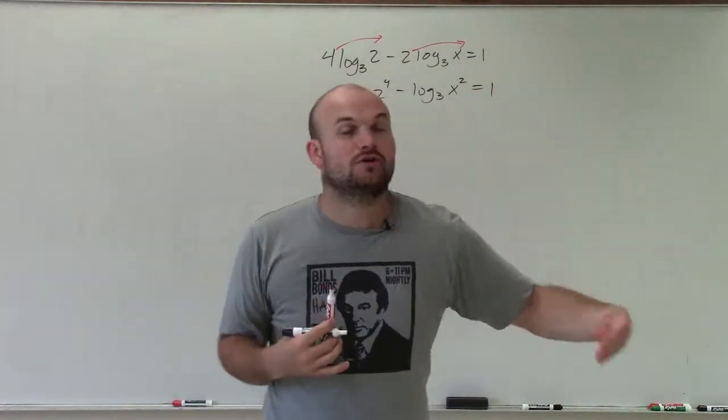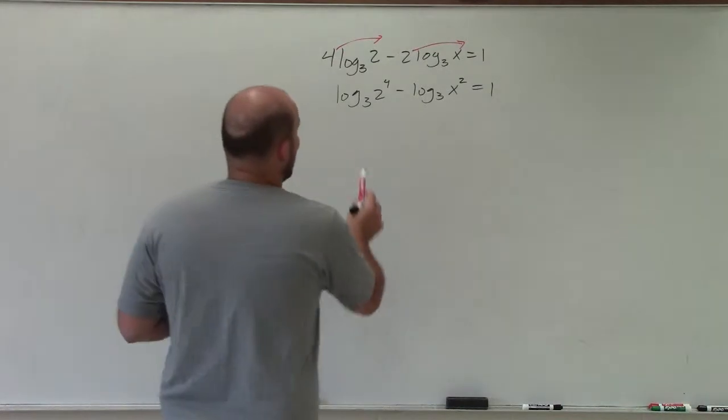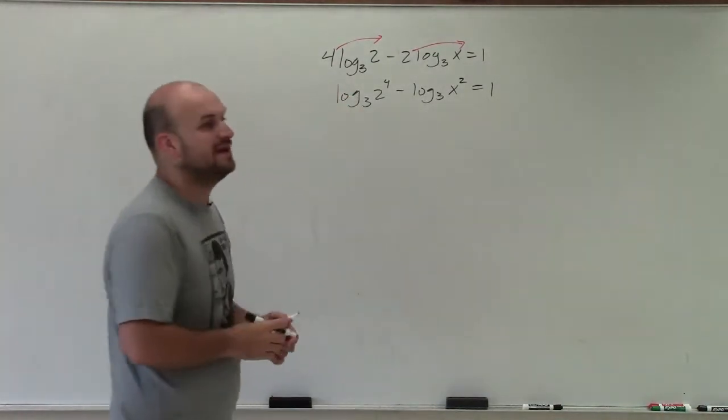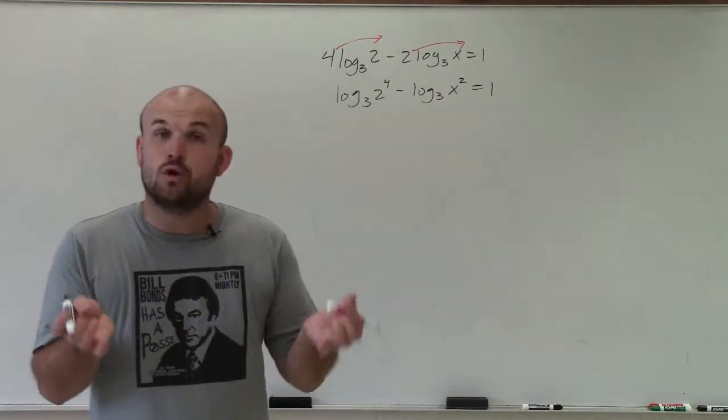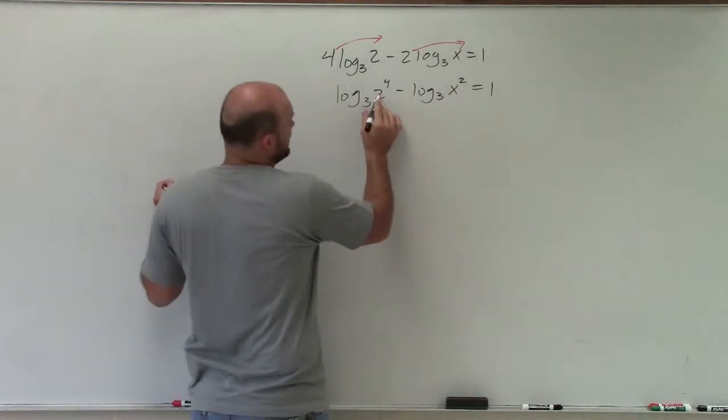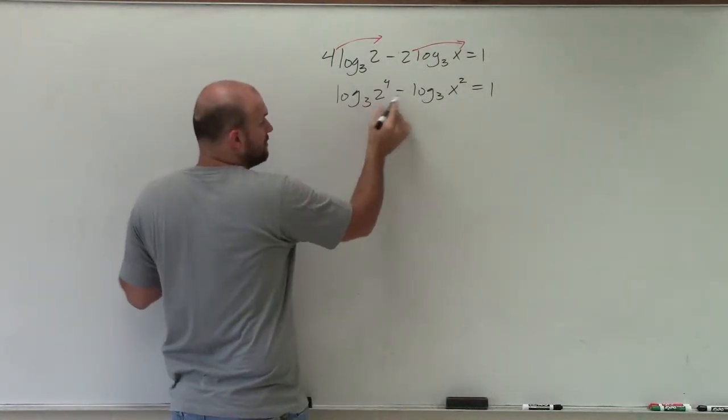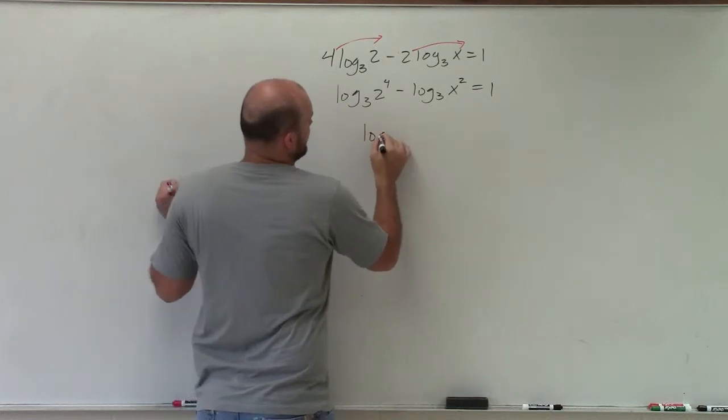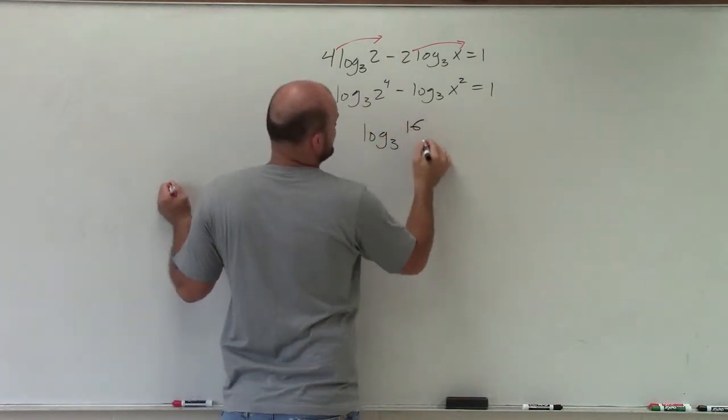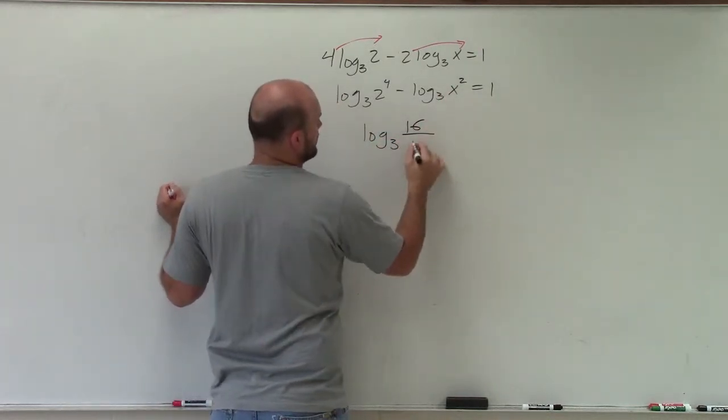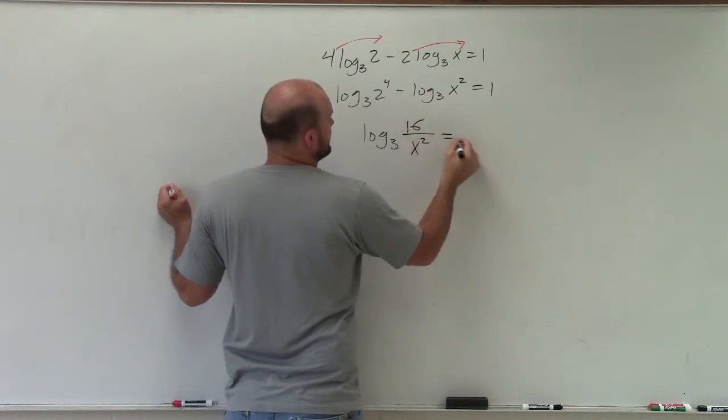So now I see that I have a logarithm subtracted by another logarithm, and they have the same base. So since they have the same base, I can rewrite this as the quotient of those terms within one logarithm. I can also evaluate 2 to the fourth power, which would be 16. So therefore, I have log base 3 of 16 over x squared is equal to 1.